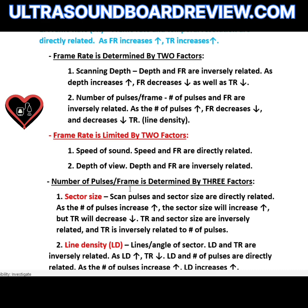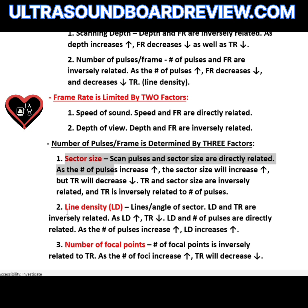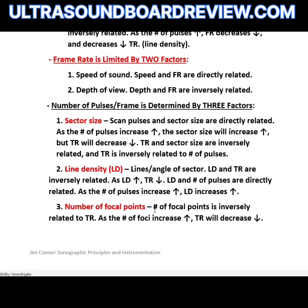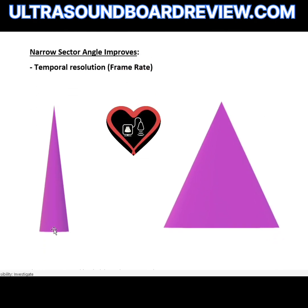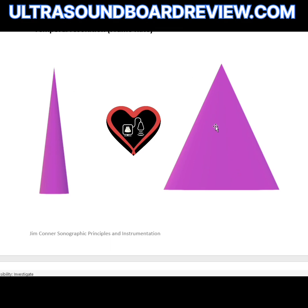The number of pulses per frame is determined by three factors: sector size, line density, and the number of focal points. Regarding sector width, a narrow sector width has the best temporal resolution and frame rate because there are fewer lines per frame and fewer pulses. When you widen your sector width, you have more lines and more pulses per frame, which degrades temporal resolution and frame rate.